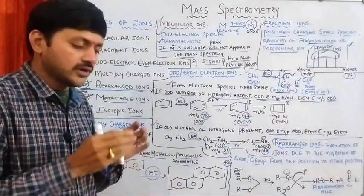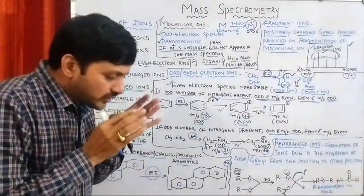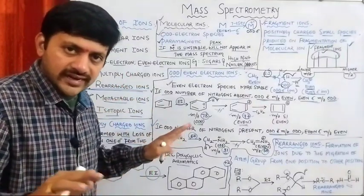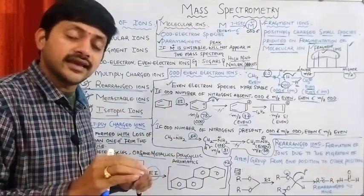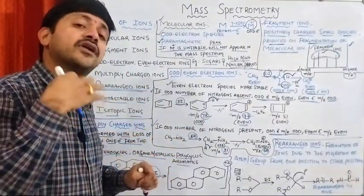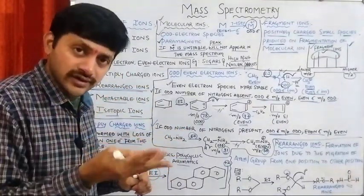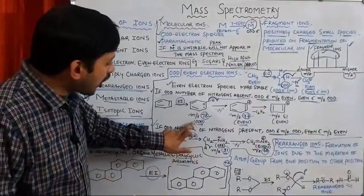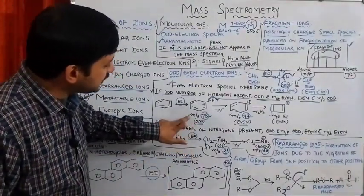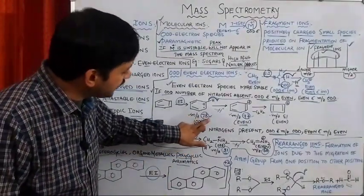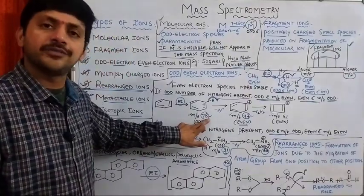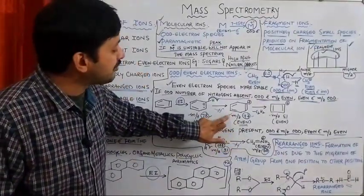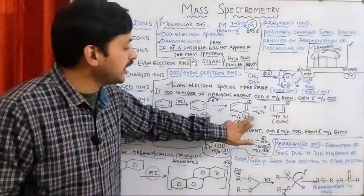So, we can explain: in organic molecules where we don't have any nitrogen, odd electron m/z is even, and even electron ion m/z is odd.